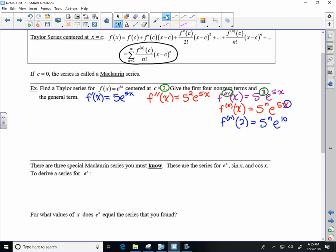So following the form, we have n equals 0 on the bottom, infinity. F to the nth derivative of f at c would be this, 5 to the nth e to the 10th power over n factorial times x minus c, but c is 2, so x minus 2 to the nth power.